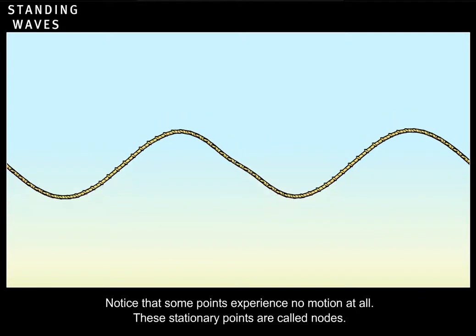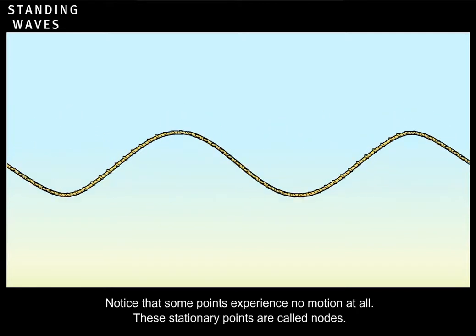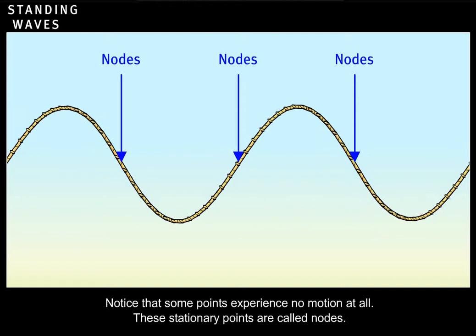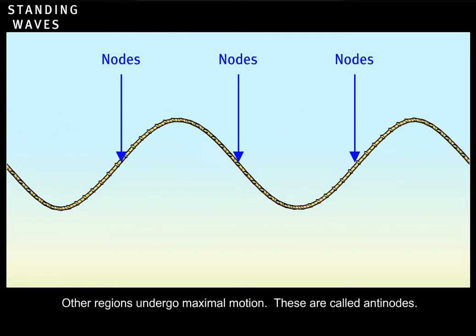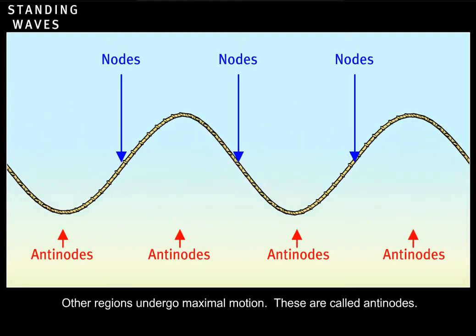Notice that some points experience no motion at all. These stationary points are called nodes. Other regions undergo maximal motion. These are called antinodes.